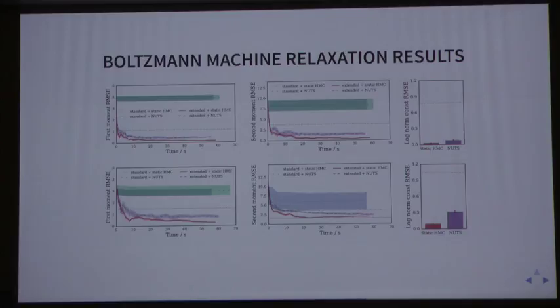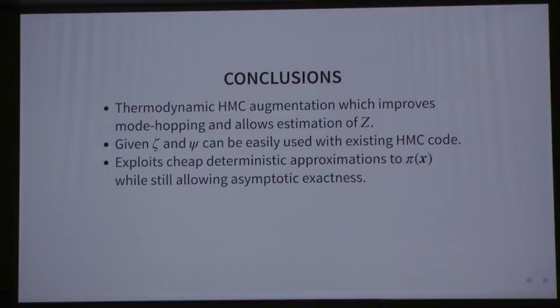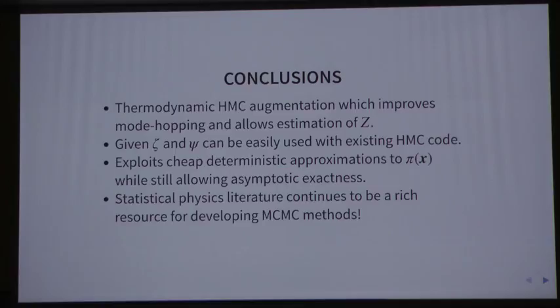Just to conclude, what we're proposing is a thermodynamic HMC augmentation, which is able to deal with a certain amount of multi-modality and also allow estimations of these normalizing constants. Given the definitions of this approximate normalizing constant and base density, it can be easily implemented within existing HMC code. The nice thing about it is it exploits these cheap deterministic approximations while still having the advantages of the asymptotic guarantees that we get from MCMC methods. And finally, all of this kind of came out with a paper from the statistical physics literature, and originally HMC in itself, a contribution from statistical physics, so it's interesting to see that there continue to be these crossover worlds where physicists are coming up with quite interesting methods that apply to statistical machine learning methods.